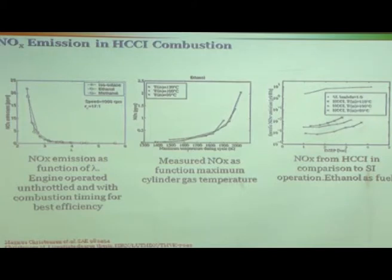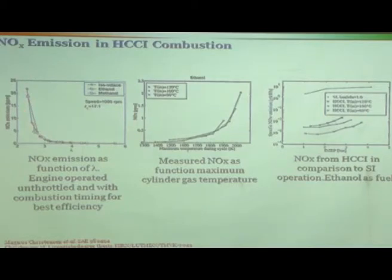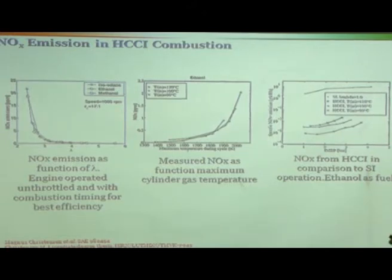Now, NOx emissions in HCCI combustion: this is NOx on the y-axis and lambda on the x-axis. When you make the mixture leaner, NOx is very close to 0; on the richer side — still lean, lambda equal to 2.5 — you have some NOx, but these values are very small. One thing that comes out is that when you try to put in more fuel and decrease lambda, you will produce more power output, but you will also produce more NOx. If you somehow manage to put a lot of fuel in HCCI mode, the engine will no longer be an HCCI engine — it will be a NOx production machine. Maximum temperature during the cycle: as it goes up, NOx production will obviously go up. BMEP — as load increases, NOx will also go up, but these values are actually very small.